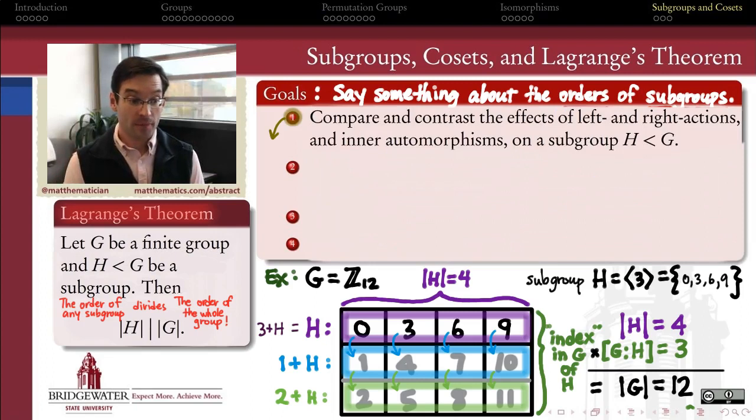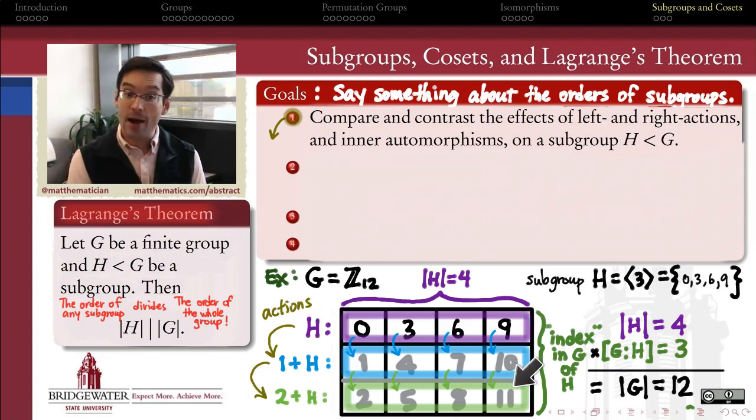So here are our goals for this chapter. First of all, we want to start building up to this idea of cosets, the rows in this table, in the more general case, by contrasting and comparing how left and right actions of elements in any group operate on a subgroup, and to be able to contrast that with the inner automorphisms that we talked about in the last video. In this example so far, that action of taking the subgroup H and shifting it down a row by adding one to it and adding an element of my group to it, that is an example of a left action.